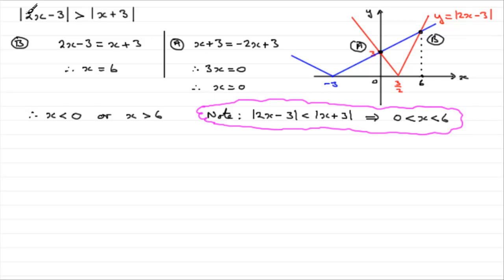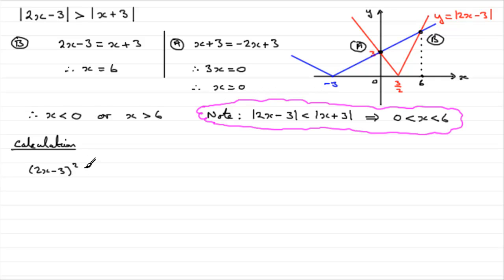Now let's look at the calculation method. Because both sides are modded, both quantities are positive, so we can use a squaring method. We can say that (2x minus 3) squared is greater than (x plus 3) squared. We can only do this because both quantities are positive.